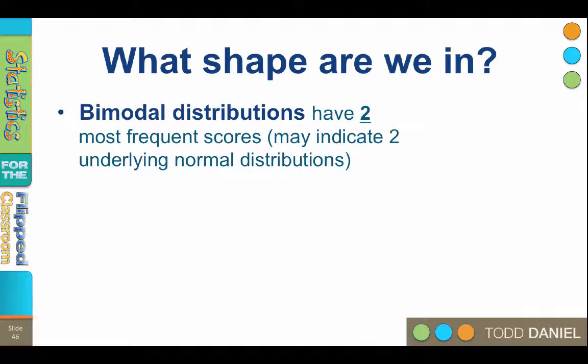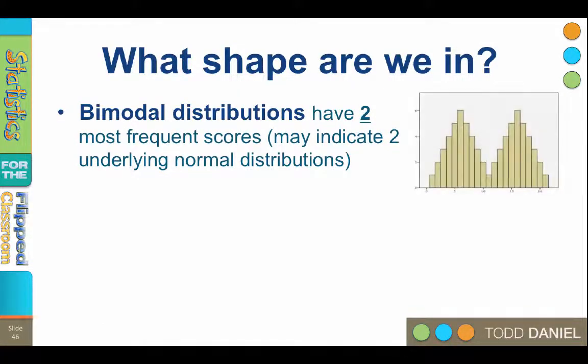Instead of having one peak, sometimes we have two peaks. This occurs when there is more than one most frequently occurring score. We call this type of curve bimodal. A curve can be bimodal when there really are two most frequently occurring scores.